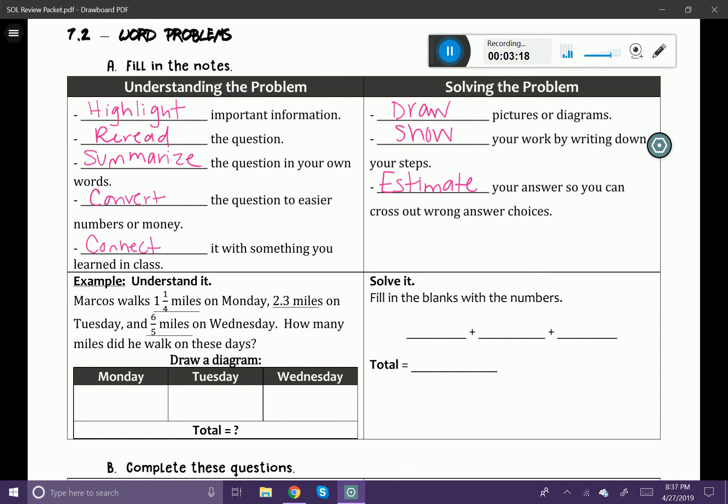How many miles did he walk in these days? Feel free to read this again if you need to. All right. So I'm just going to summarize what's happening here. Marcos is going to take a walk. Maybe he's walking his dog. Maybe he's walking with a friend, but he's going to walk on Monday, Tuesday and Wednesday in the same week. And we want to know, if he walks the individual miles on those days, if we were to add them all together by the end of the week, how far did he walk? So there I'm just summarizing what's happening.